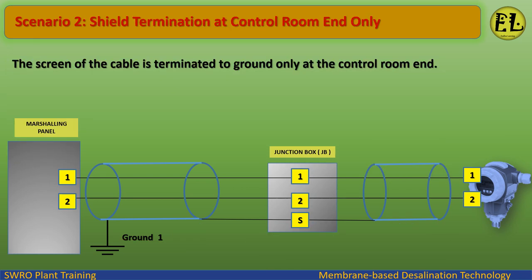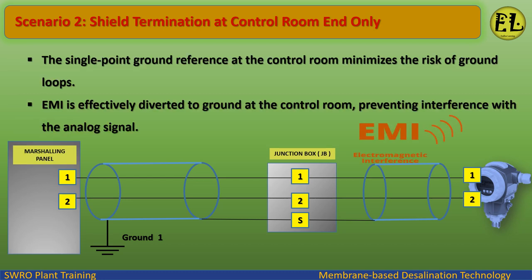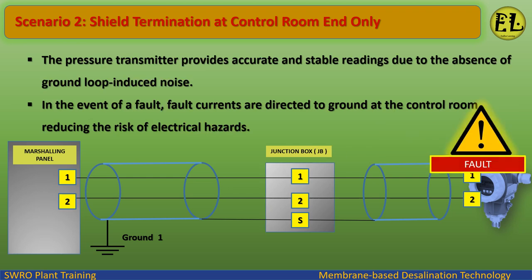Scenario 2: Shield termination at control room end only. The screen of the cable is terminated to ground only at the control room end. The single point ground reference at the control room minimizes the risk of ground loops. EMI is effectively diverted to ground at the control room, preventing interference with the analog signal. The pressure transmitter provides accurate and stable readings due to the absence of ground loop induced noise.